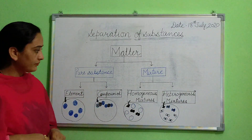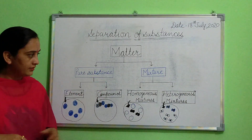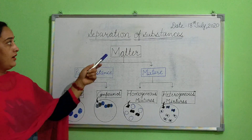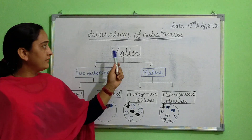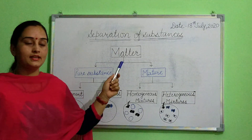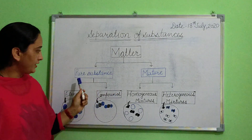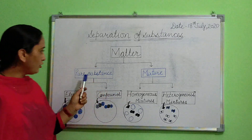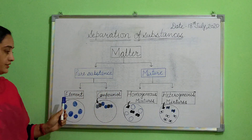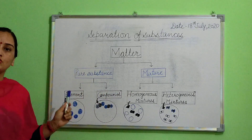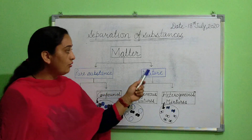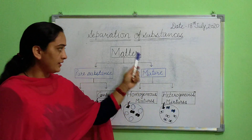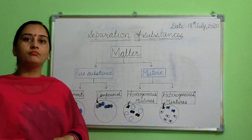And once again, recapitulating this topic — separation of substances. We can say matter is divided into pure substances and mixtures. Pure substances are further categorized into elements and compounds. Homogeneous and heterogeneous mixtures are the types of mixture.